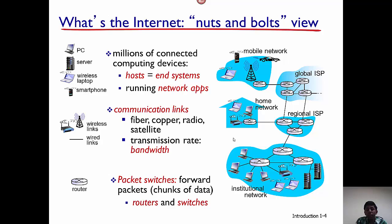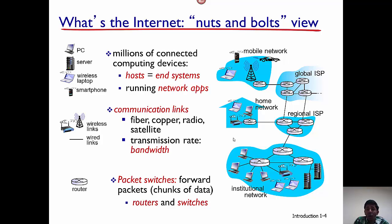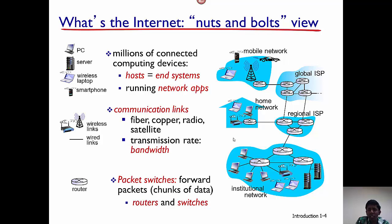The internet is actually a network of networks, and there are many networks shown in this figure. For example, there is a mobile network, a home network, and an institution network. These are then connected to the ISPs. The home network can be considered the network at your home — for example, a few devices like your laptop, your computer, and your phone are connected to the home router. This home router is then connected to the router of your ISP. An institution network is similar to an institution like CSUMB, where a few hundred devices are connected together using communication links, and then this network is connected to the regional ISP. We'll go into details about ISPs, both regional and global, later on during this course.